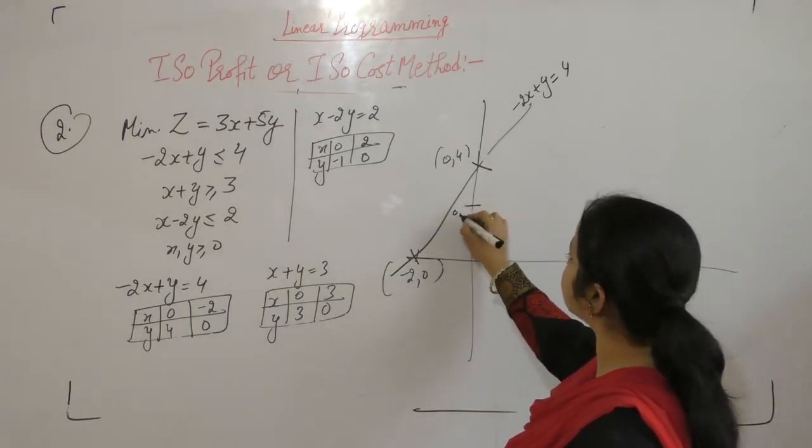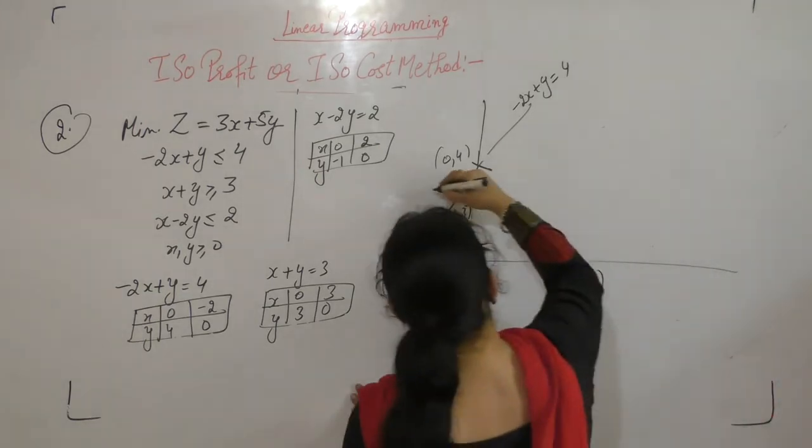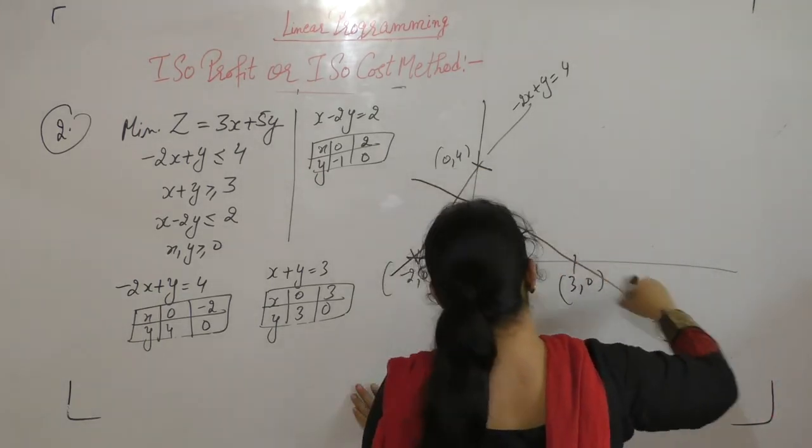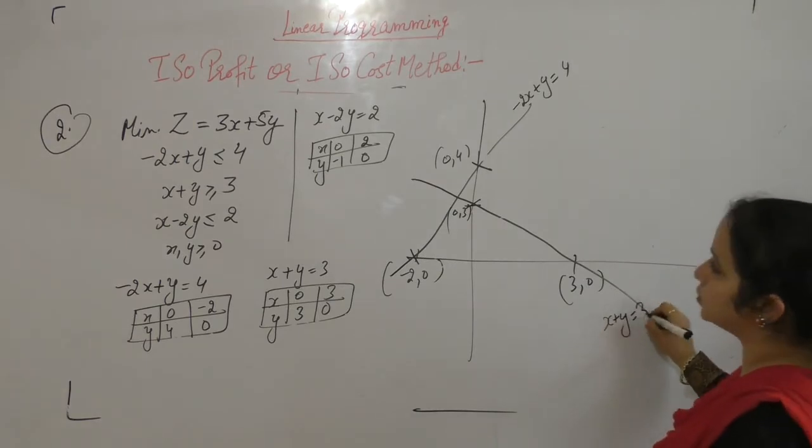x is 0, y is 3. x is 3, y is 0. So this is the line x plus y equals 3.